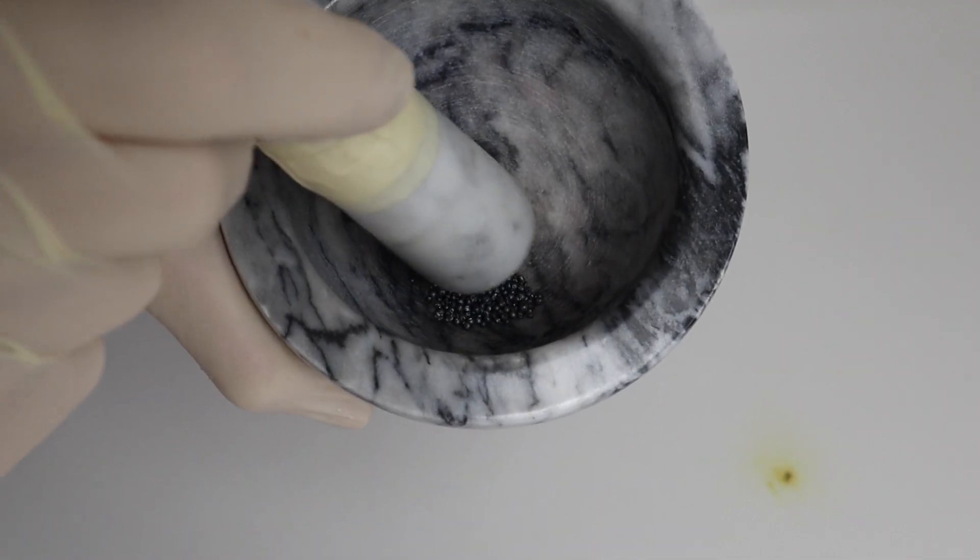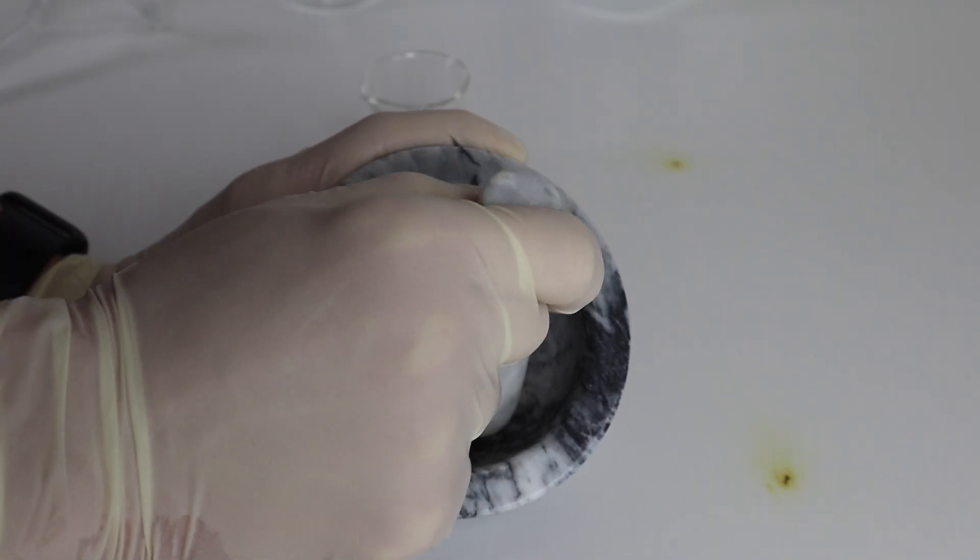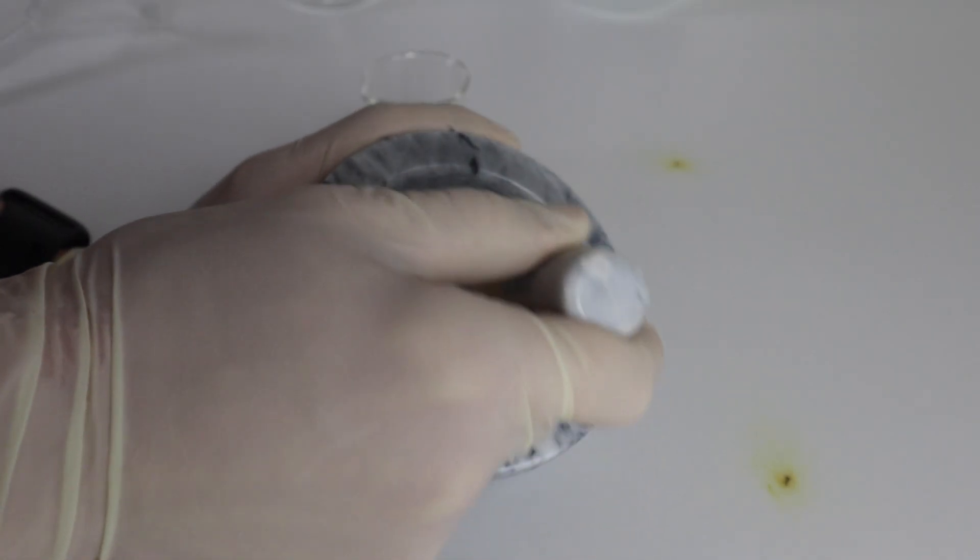The next step is to grind up the iodine into a mortar and pestle until it is a fine powder. This will just make it so the reaction happens a little bit faster.